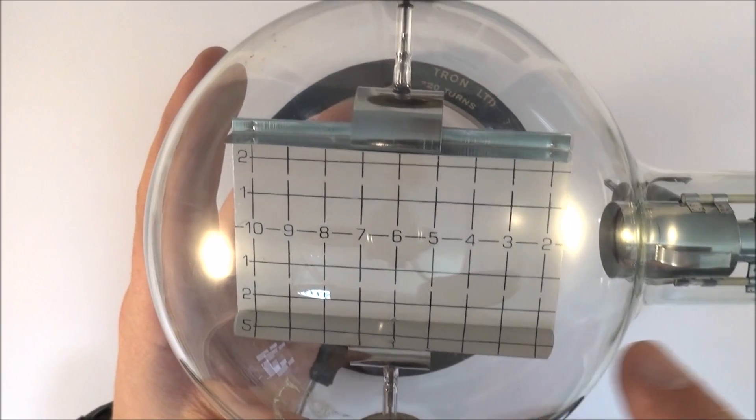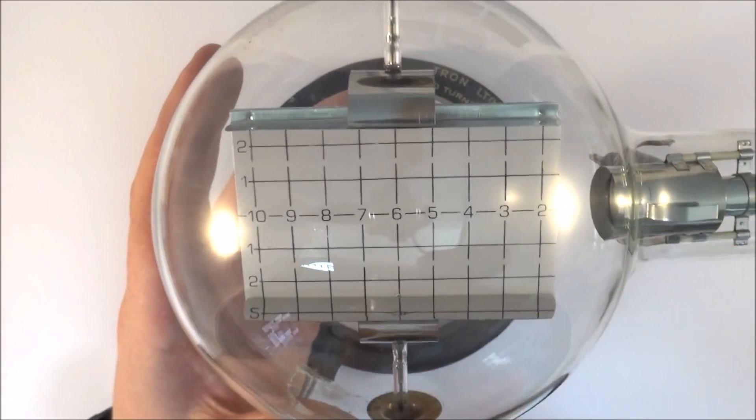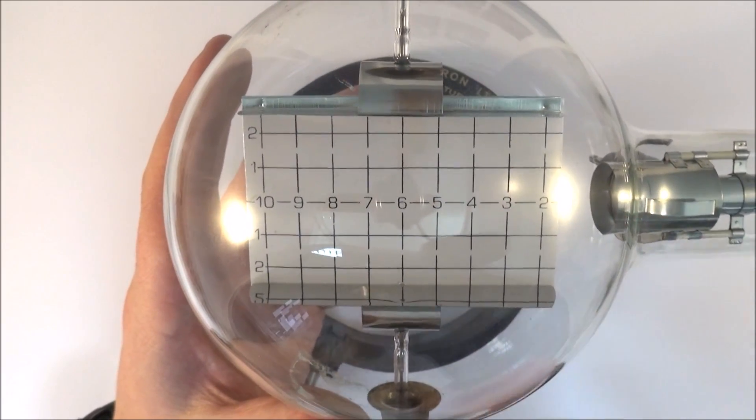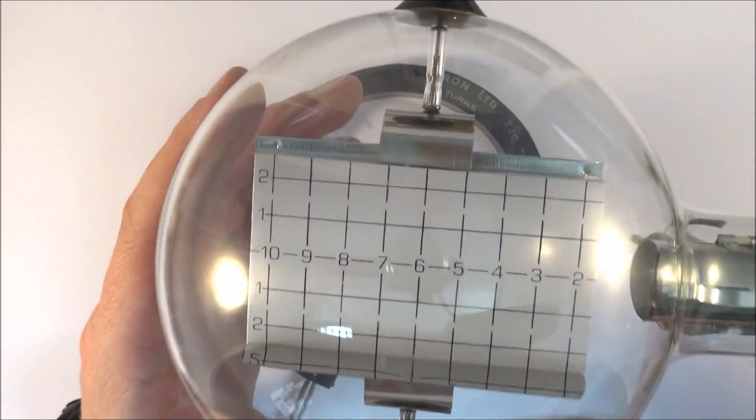When it goes straight through we can then use that information by measuring maybe the B field or measuring the size of the electric field in order to work out this charge to mass ratio. So this one is a deflection tube.